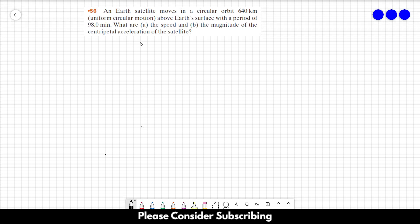Number 56: An Earth satellite moves in a circular orbit 640 km above Earth's surface with a period of 98 minutes. What are letter A, the speed, and letter B, the magnitude of the centripetal acceleration of the satellite?